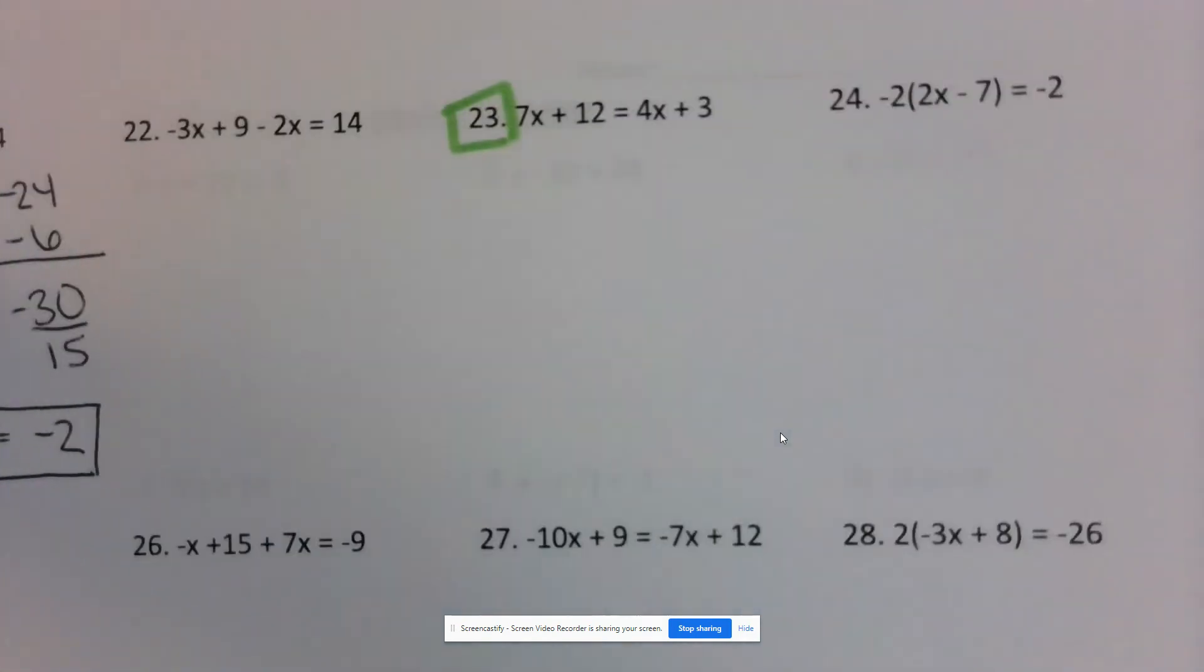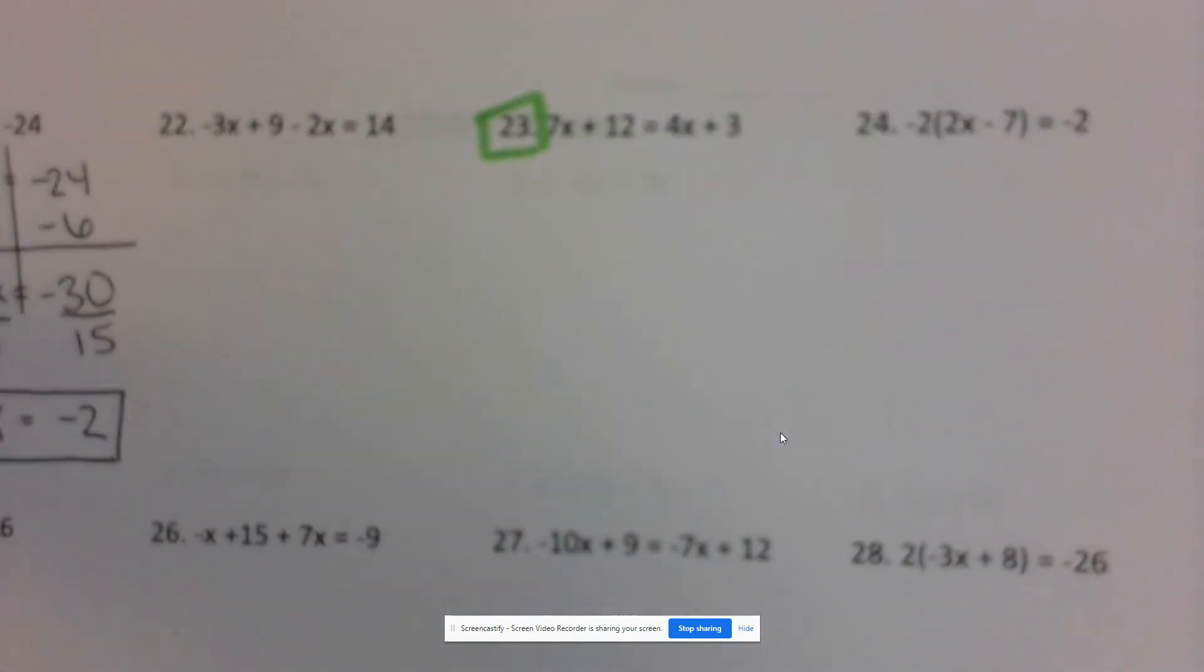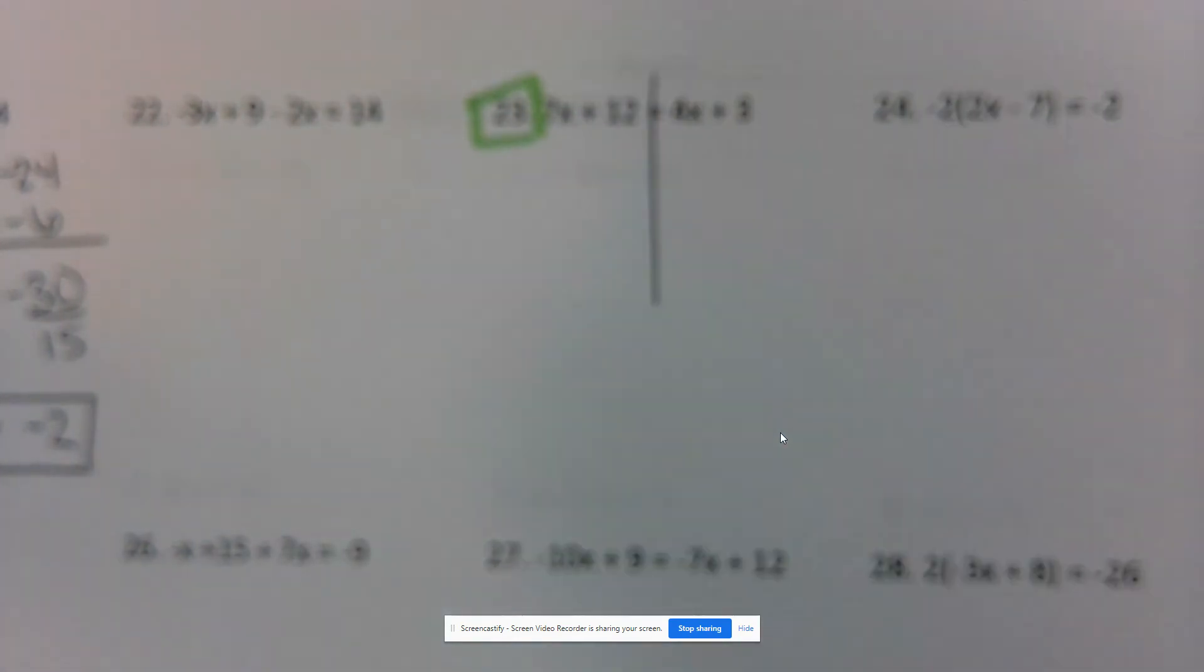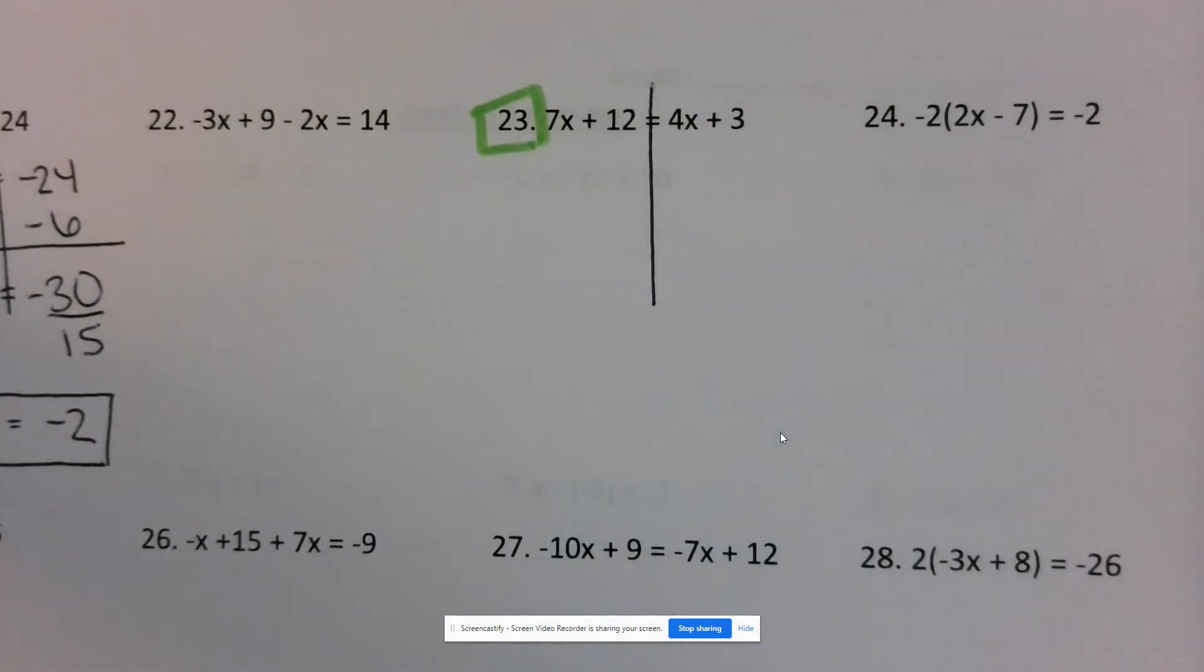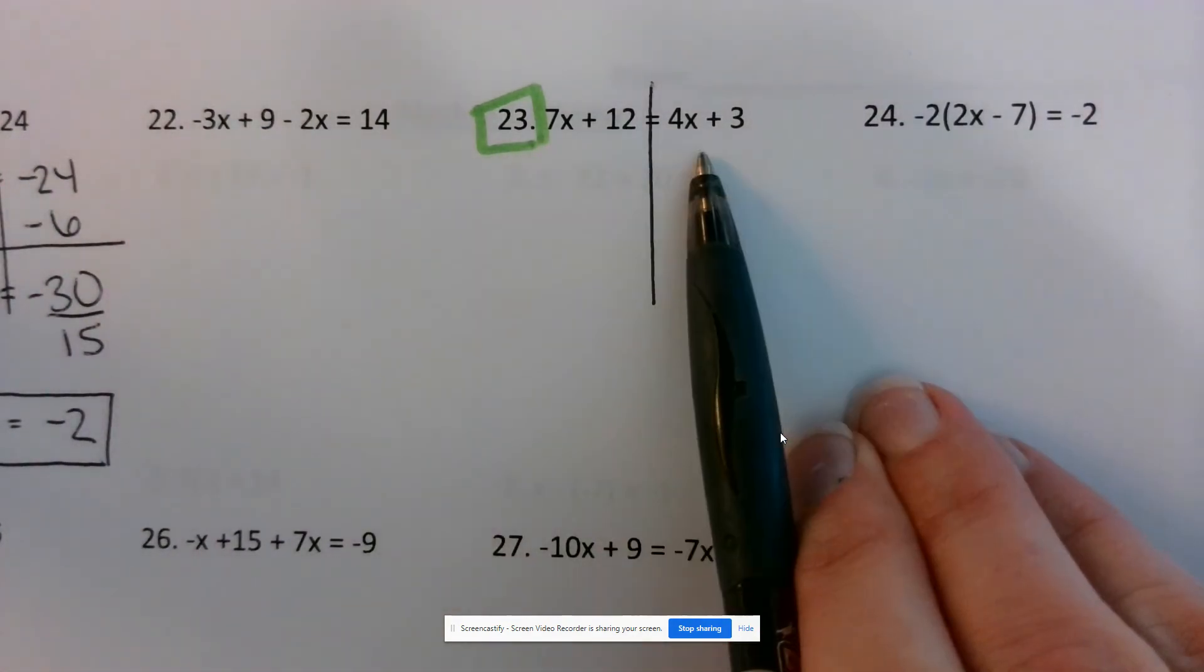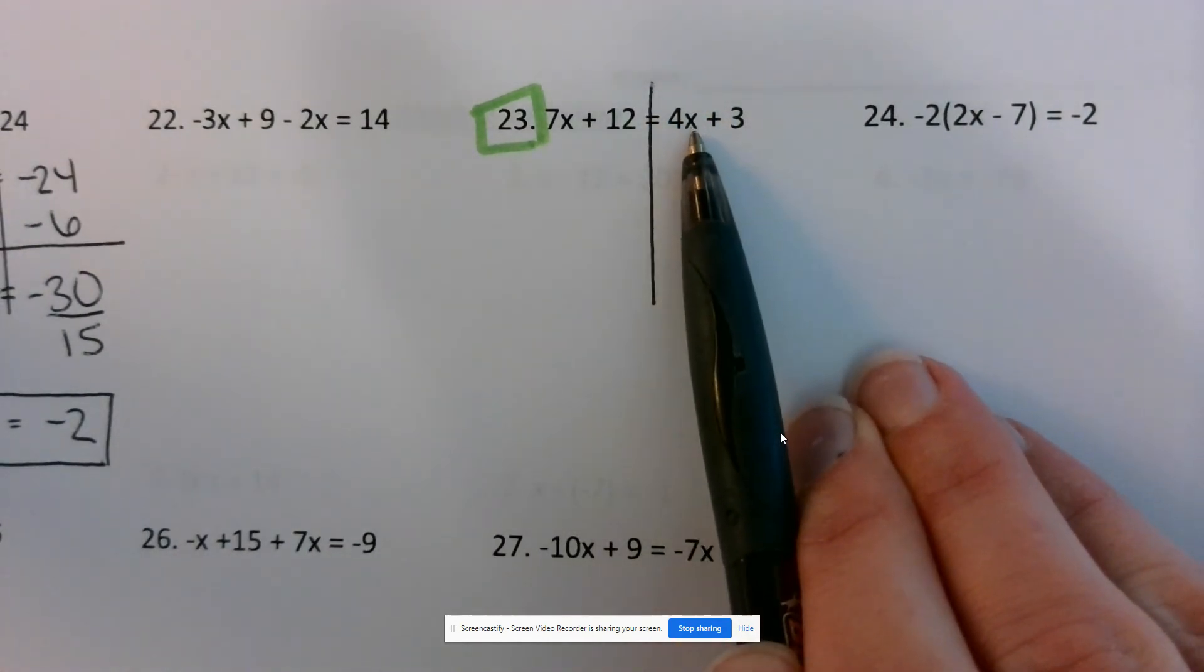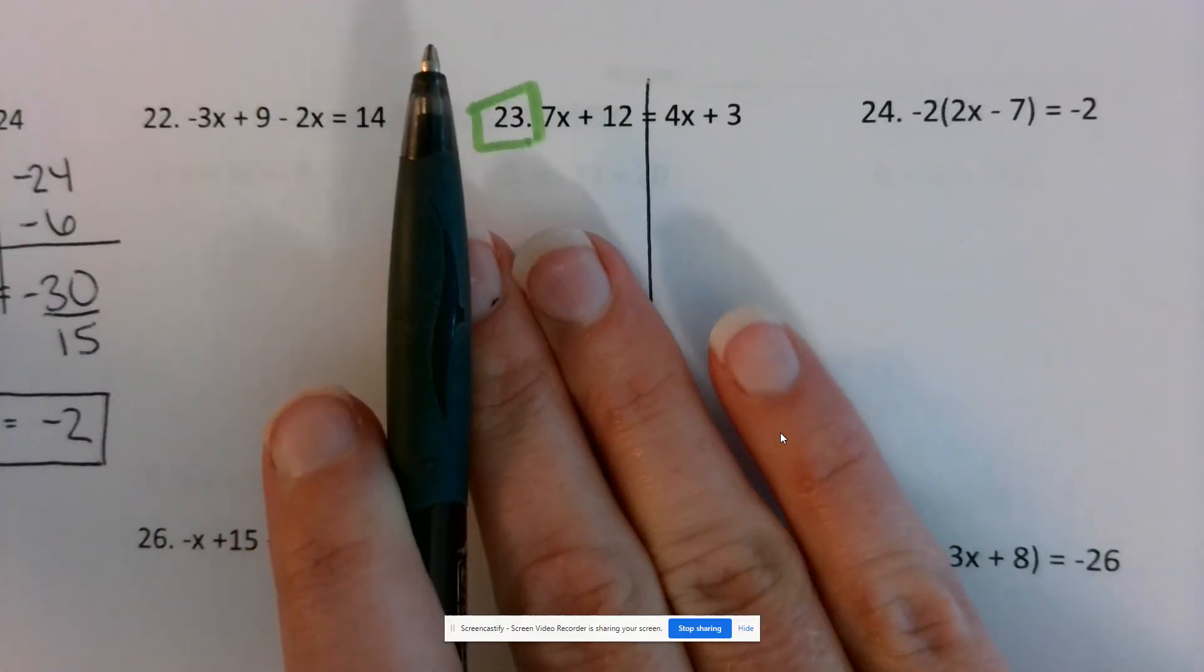The last one we're going to do together is number 23. We need to solve the equation 7x plus 12 equals 4x plus 3. What's different about this equation is that you'll notice there are x's on both sides of our equal sign. Before we do anything, it's a good idea to move all of your x terms to one side. I usually get rid of the smaller terms. So I'm going to get rid of this 4x on the right side so that all my x terms are on the left.